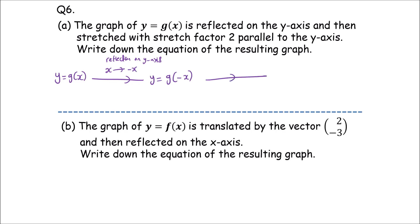Next, what do we need to do? We need to do a stretch parallel with the y-axis — this means a vertical stretch with scale factor 2. If you want to do a vertical stretch with scale factor 2, you need to put 2 in front of the function. Then the equation is y equals 2g of negative x. This is the answer to part A.